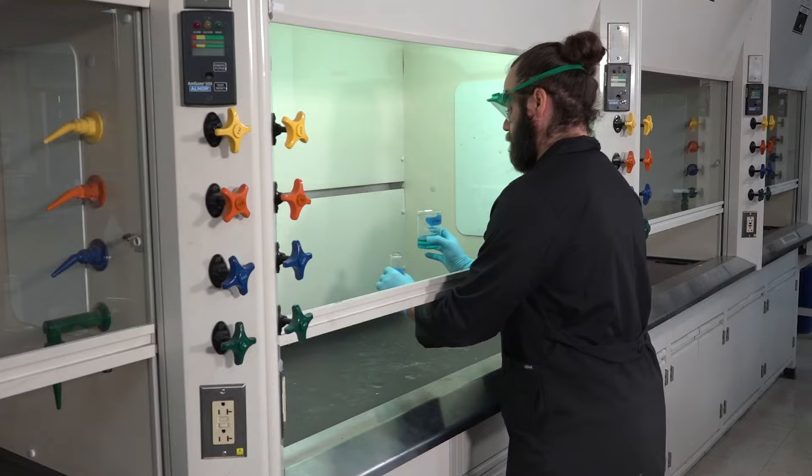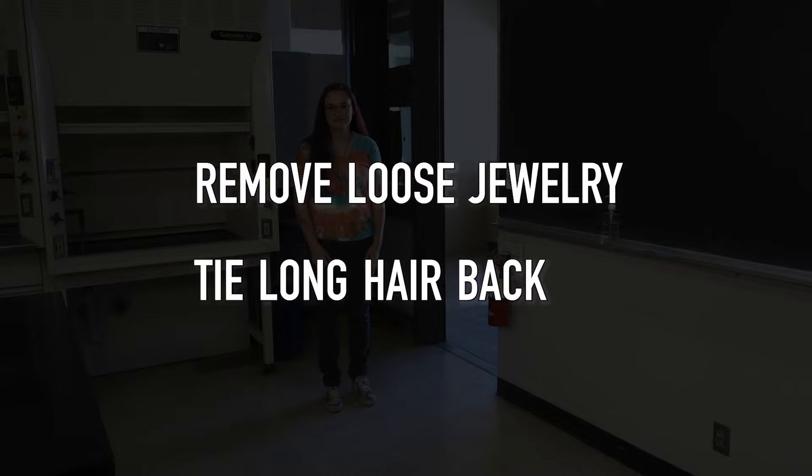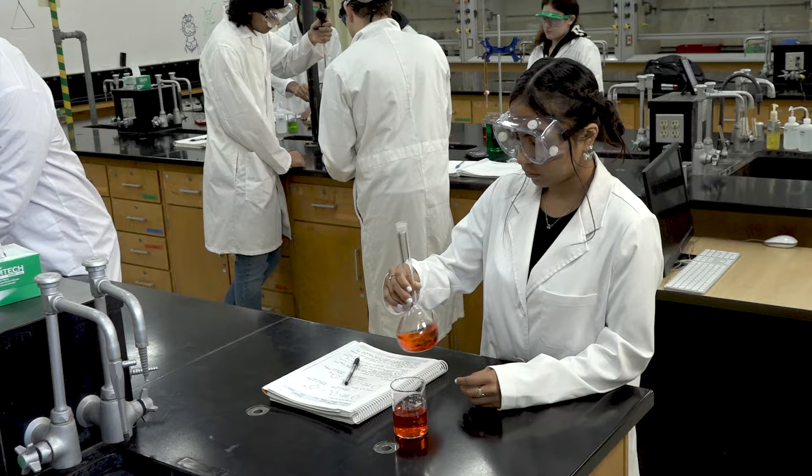Before you start handling chemicals or heat sources, it's important to remove any loose jewelry and tie long hair back. Long hair is prone to fall into chemicals or catch fire, while loose jewelry can catch on glassware and lead to spills.